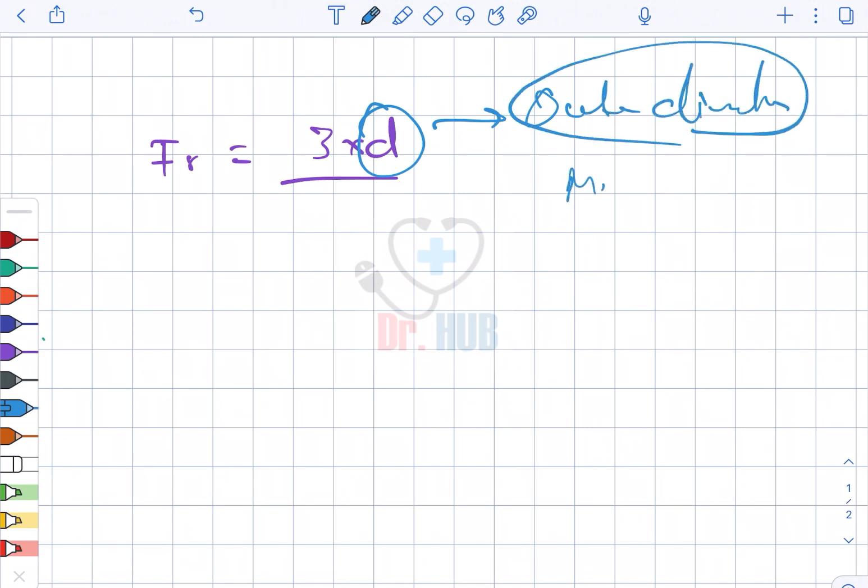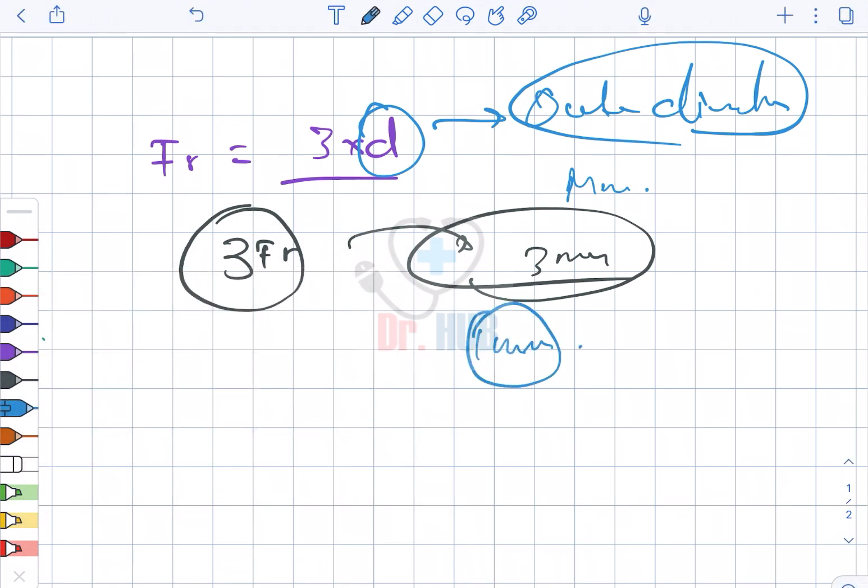Next, what we see is the 3 Fr catheter will have a circumference of approximately 3 millimeters and a diameter of approximately 1 millimeter. So diameter is 1 millimeter and circumference is 3 millimeters.